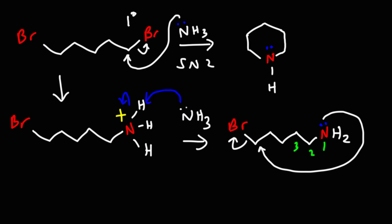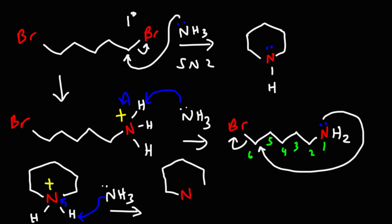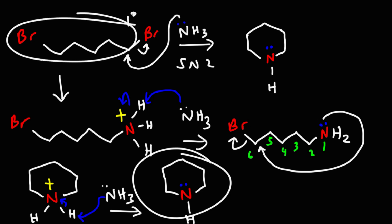We can count the atoms: one, two, three, four, five, six — so we're going to get a six-membered ring with nitrogen being part of that ring. But right now nitrogen has two hydrogen atoms attached to it and a positive formal charge, so we need to use another ammonia molecule to remove this hydrogen. This gives us our final product, which is a cyclic amine. That's how we can get this product from this particular alkyl dihalide.